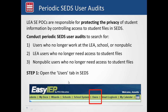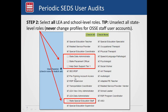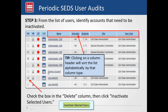Here's an easy way to conduct a SEDS user audit. Step one: go into SEDS and open up the Users tab. Check all the boxes, then uncheck the boxes for OSCE staff user types — those are circled on screen — because some OSCE staff do need access to your student files, but please never change their level of access. Checking all the remaining boxes gives you a long list of who has access to your LEA's SEDS account.